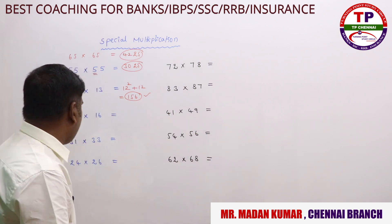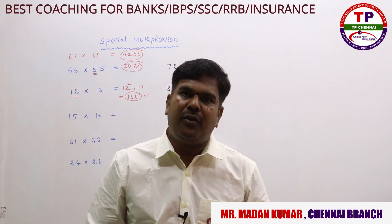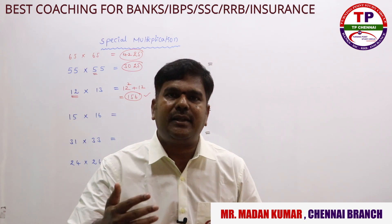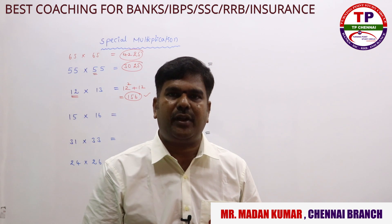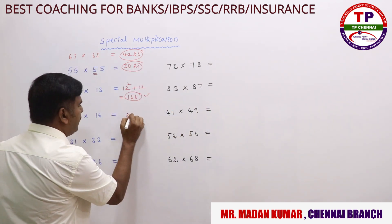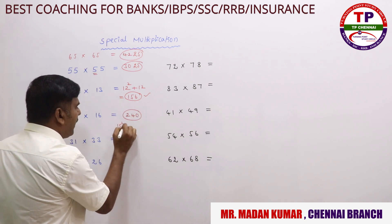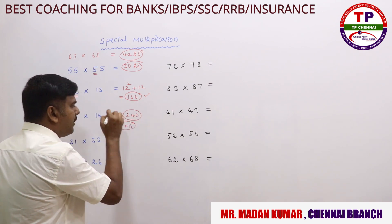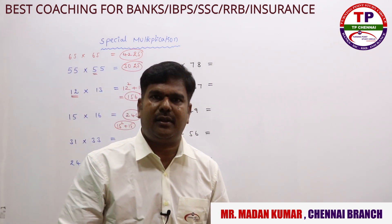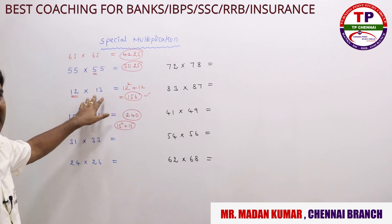Now for 15×16 — which is the smaller number? 15. What is 15²? 225. Add that number again: 225 + 15 = 240. So 240 is the answer. This rule applies whenever the difference between the two numbers is 1 — take the smaller number squared and add that smaller number again.